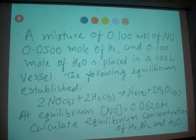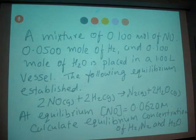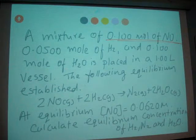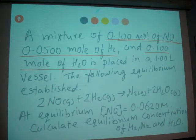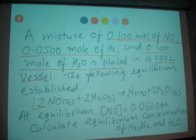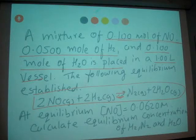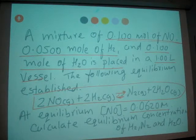A mixture of 0.100 mole of NO, 0.05 moles of H2 gas, and 0.1 mole of H2O is placed in a 1 liter vessel. The following equilibrium is established: 2NO(g) + 2H2(g) equilibrium arrow N2(aq) + 2H2O(g). At equilibrium, NO concentration is 0.0620 molar.